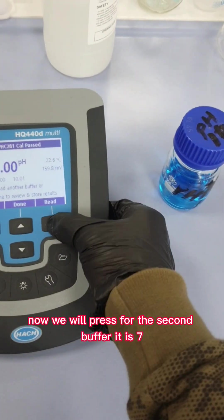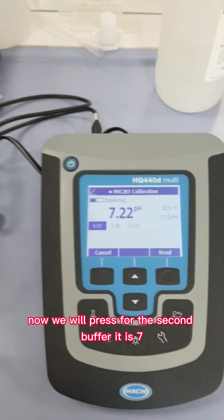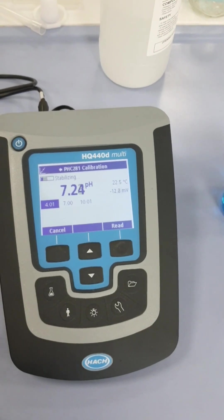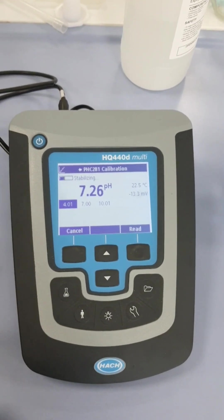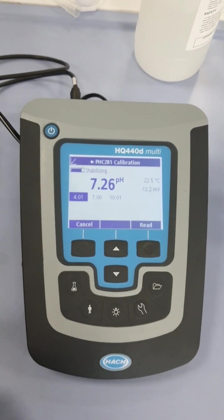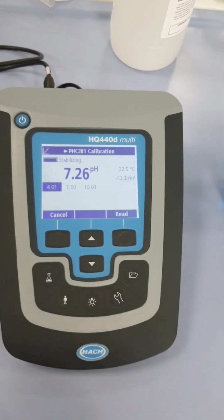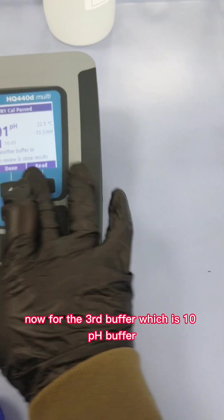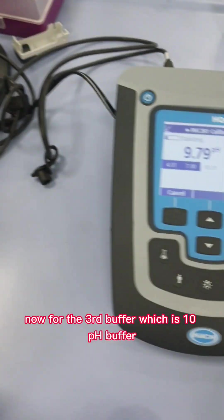Now we will press for the second buffer which is pH 7. Now for the third buffer which is pH 10 buffer.